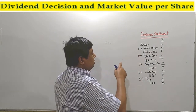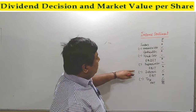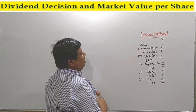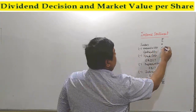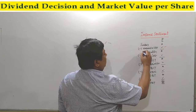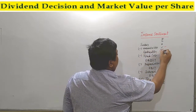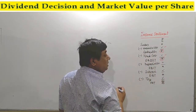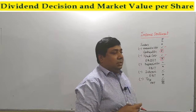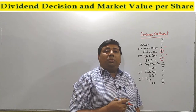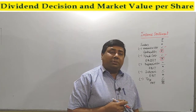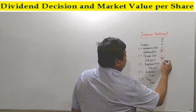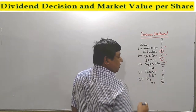Let's look at the income statement here. Once you follow the income statement, know one by one: Sales, less variable cost, we got contribution. From contribution, we less fixed cost, we got EBDIT — actually Earnings Before Depreciation, Interest and Tax. From EBDIT, first we pay depreciation, and we got EBIT.